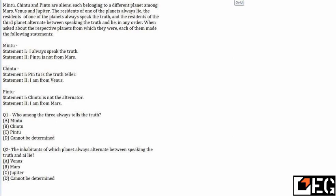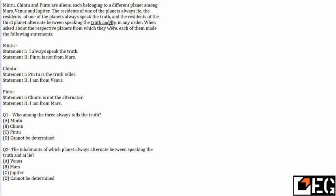The statement given is: Mintu, Chintu and Pintu are aliens, each belonging to a different planet among Mars, Venus and Jupiter. The residents of one planet always lie, the residents of one planet always speak the truth, and the residents of the third planet alternate between speaking the truth and lying in any order — they can start with truth then lie, or vice versa.